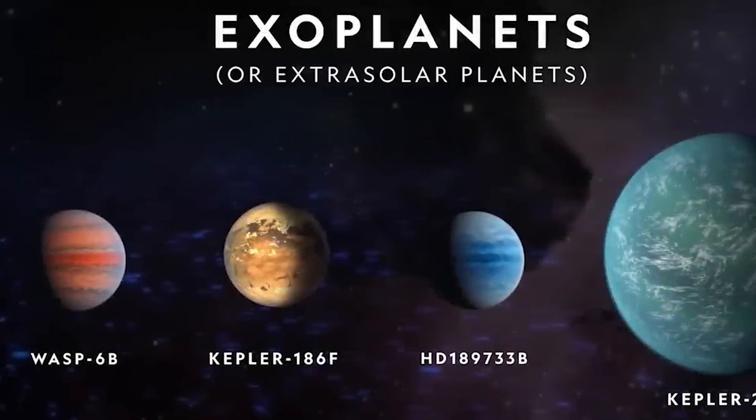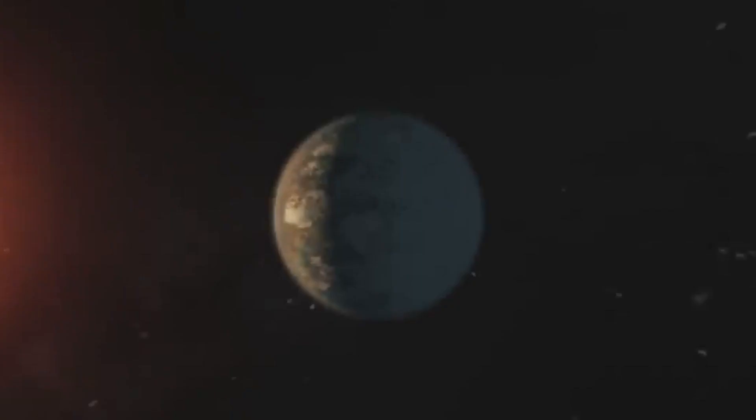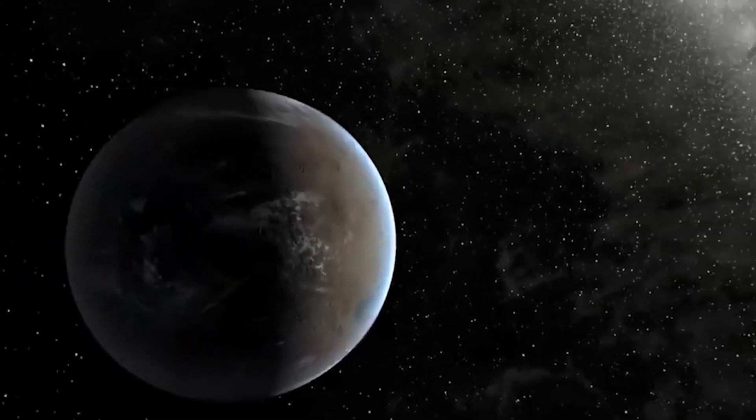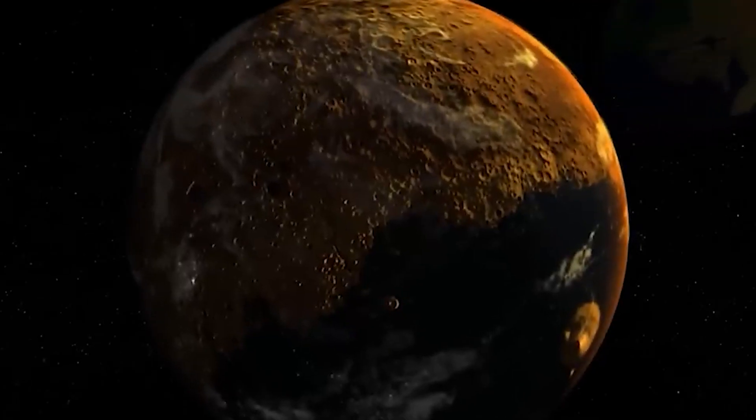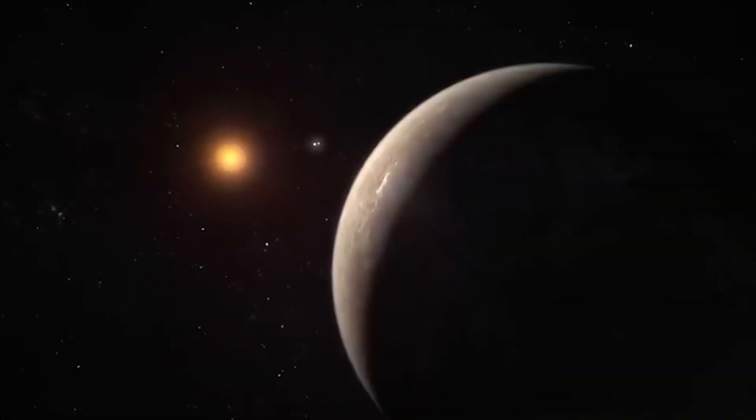Some exoplanets that have been identified as potentially habitable, such as Proxima b, Trappist-1e, and Kepler-452b, are located in the habitable zone of their star and have similar properties to Earth, such as rocky surfaces, mild temperatures, and possible water sources. However, more data is needed to confirm their habitability and assess their suitability for life.